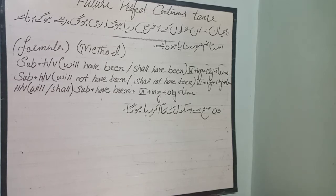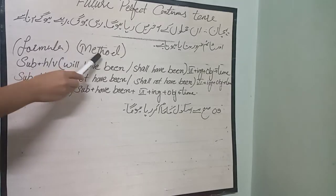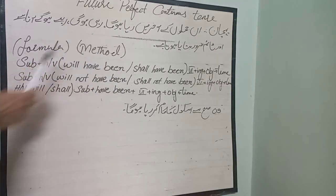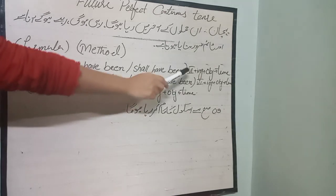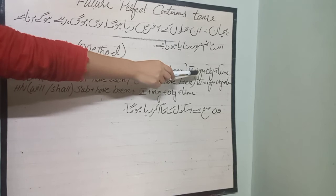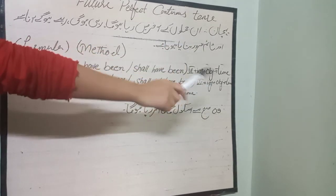The formula or method — you should know the formula. Every sentence or every tense, I write the formula and method every time. I will write the subject. In the helping verbs, will have been and shall have been. Here is the first form plus -ing, plus object, plus time, because time is written in our sentence.